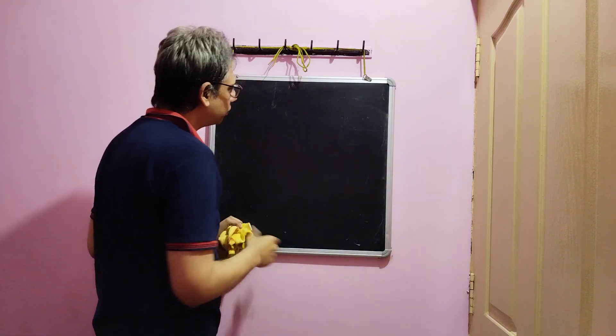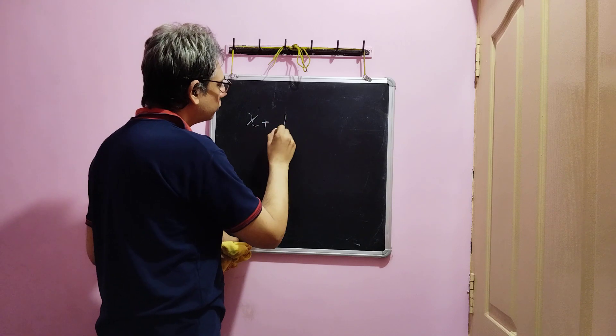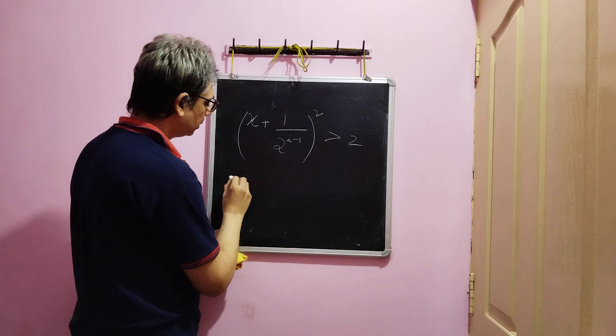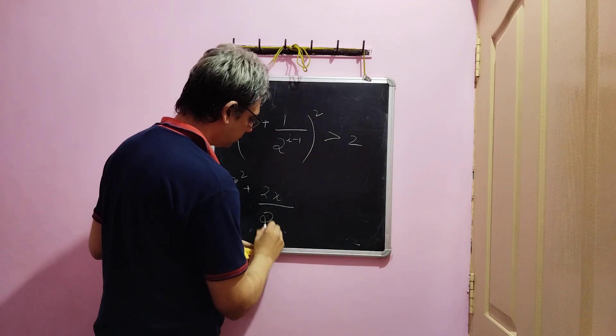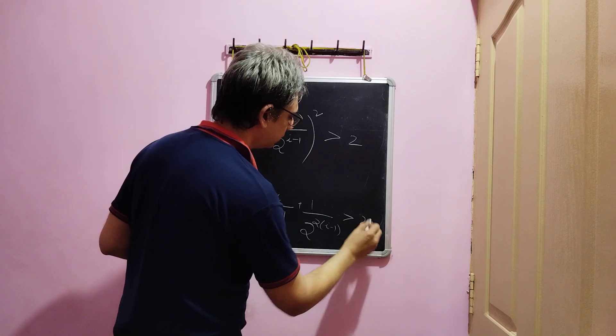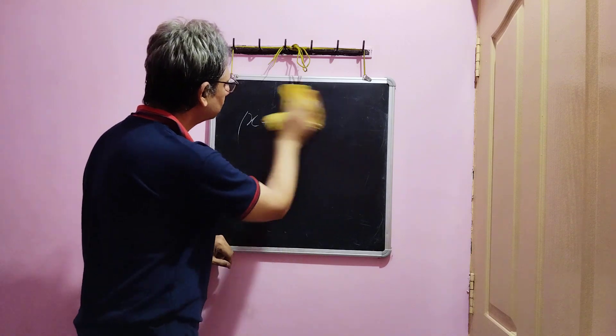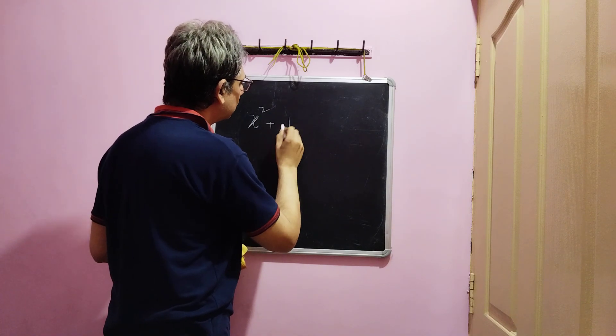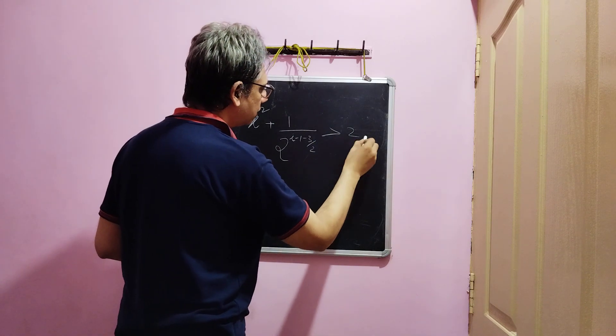Along similar lines, we also require for the other bound to find a value. We require x plus 1 by 2 power i minus 1, the whole square will be greater than 2. That is x square plus 2 x by 2 power i minus 1 plus 1 by 2 power 2 times i minus 1 greater than 2. Again, if we neglect this last term and replace this with root 2, we will get x square plus 1 by 2 power i minus 1 minus 3 by 2 greater than 2.